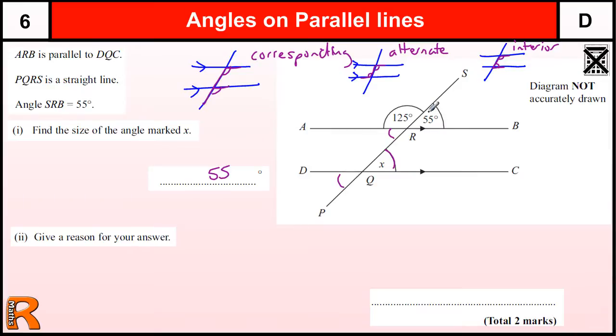But why is that? Well, the reason is because of this shape here, whoops, already drawn, is an F shape. And we have to use the special word for it, and that word is corresponding.